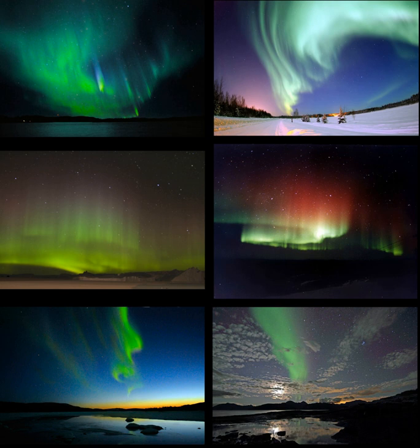Auroras frequently appear either as a diffuse glow or as curtains that extend approximately in the east-west direction. At some times they form quiet arcs; at others they evolve and change constantly — these are called active aurora. The most distinctive and brightest are the curtain-like auroral arcs. Each curtain consists of many parallel rays, each lined up with the local direction of the magnetic field, consistent with auroras being shaped by Earth's magnetic field.